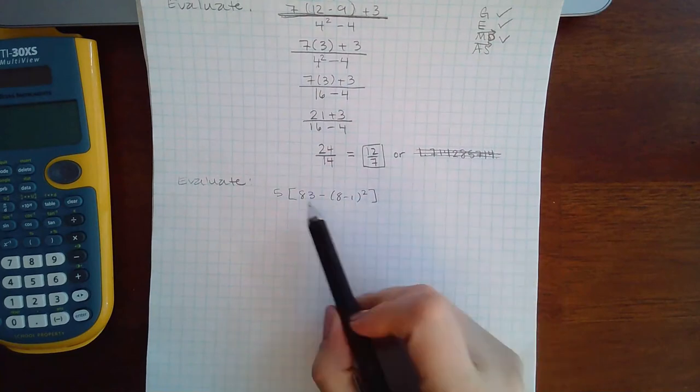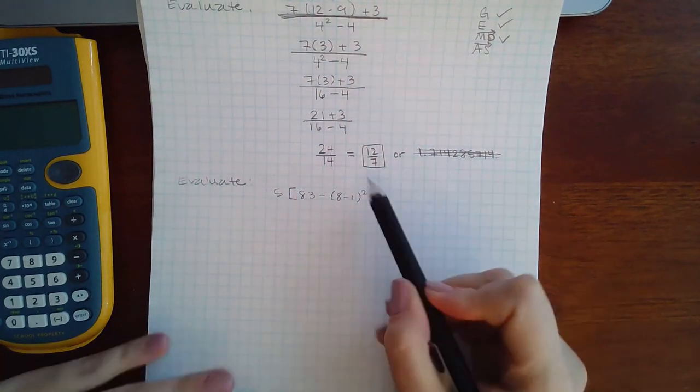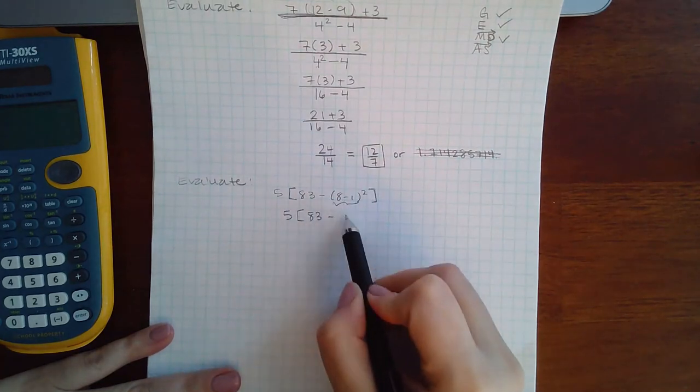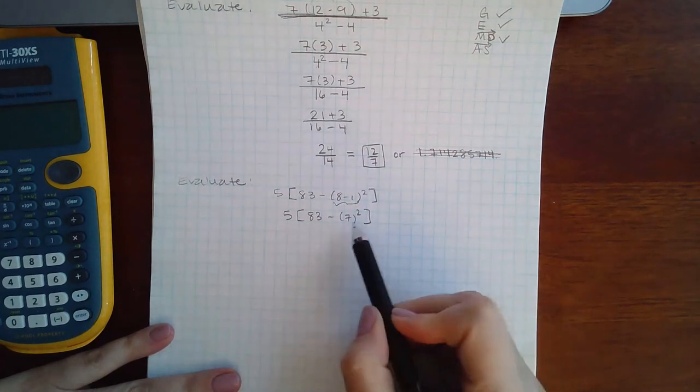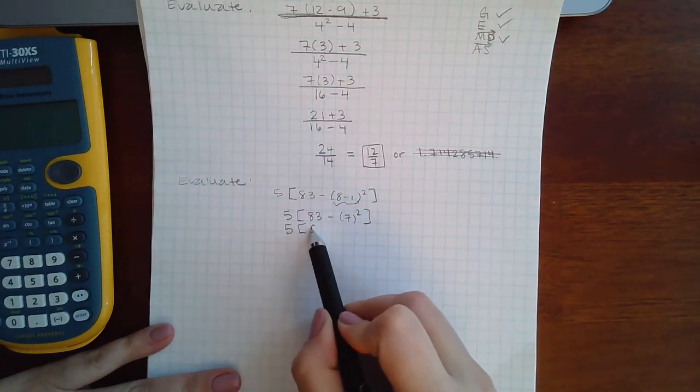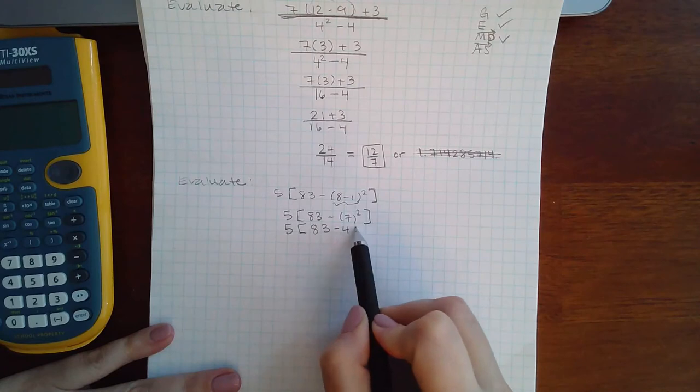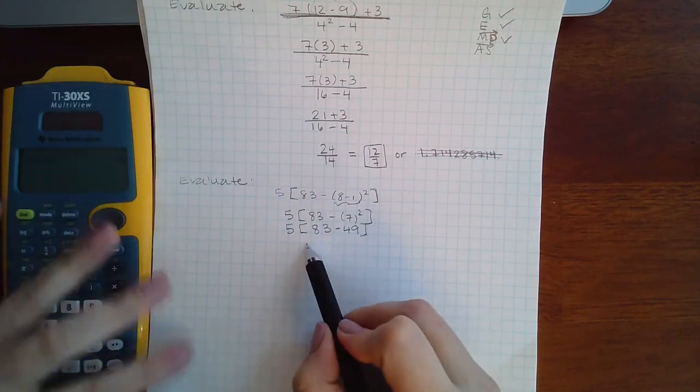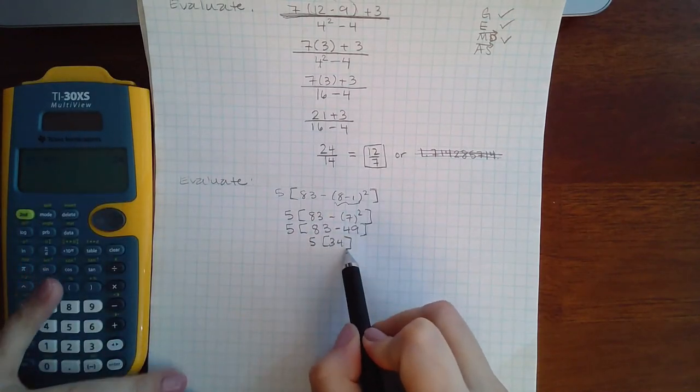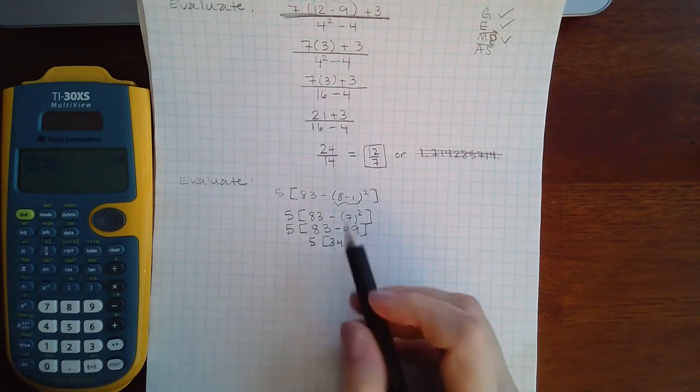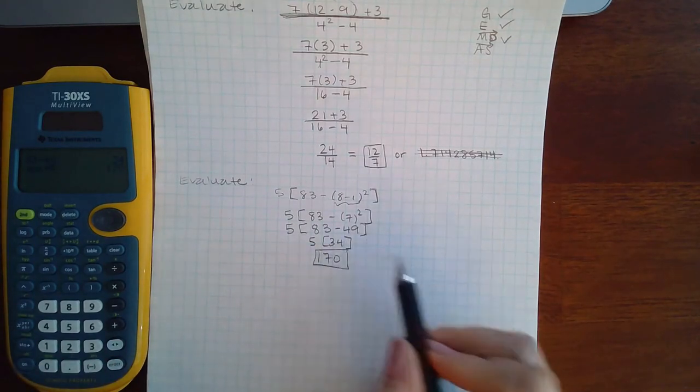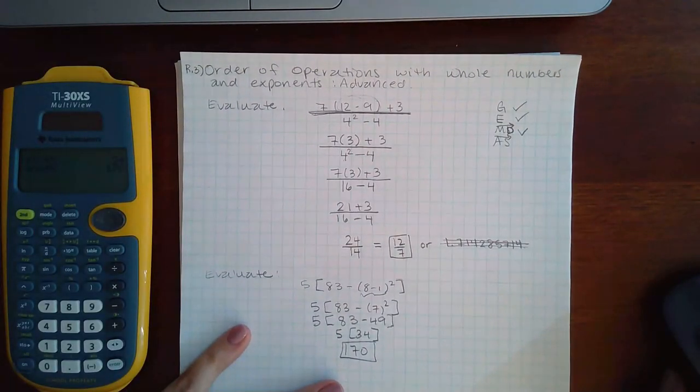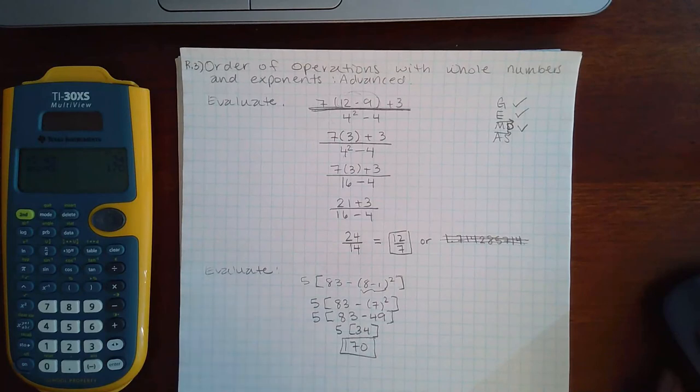Okay, here we are in the next one. So we're going to do our groups. We have a group here with the bracket, but we need to do the innermost group, which is the parentheses, so we have 7 squared. Now then we need to evaluate inside that bracket, so we have 83 minus 49. And then we need to finally subtract inside that bracket and we get 5 times 34. And then finally I can multiply as my last step and get 170. And that is the end of order of operations with whole numbers and exponents advanced.